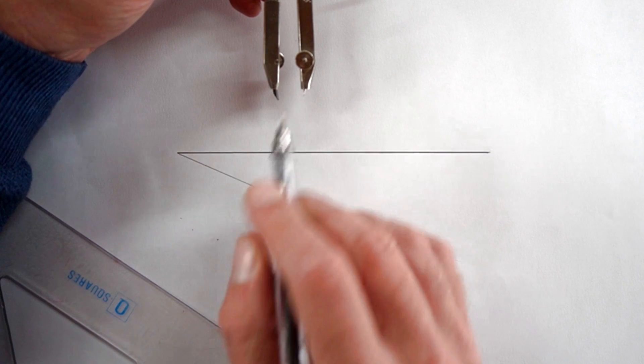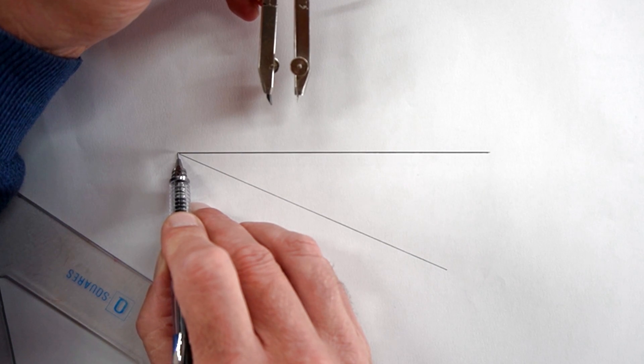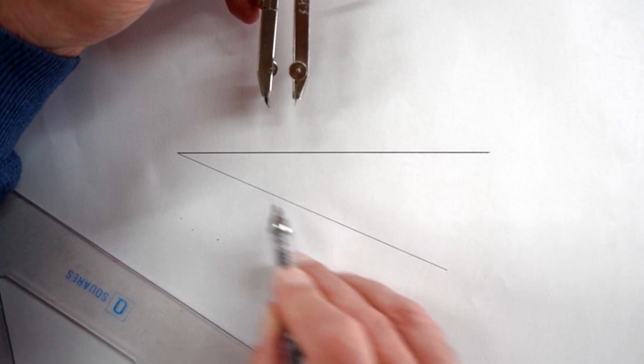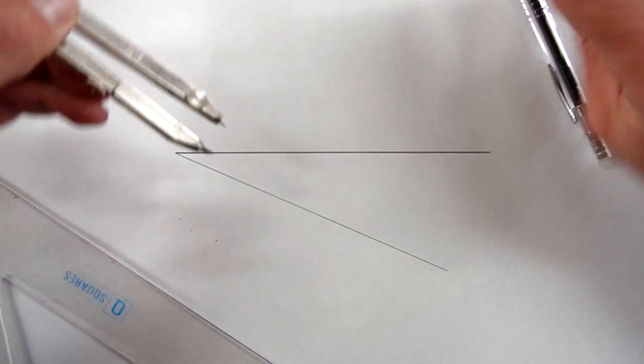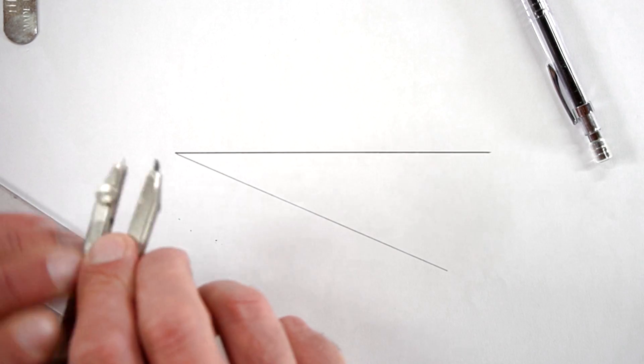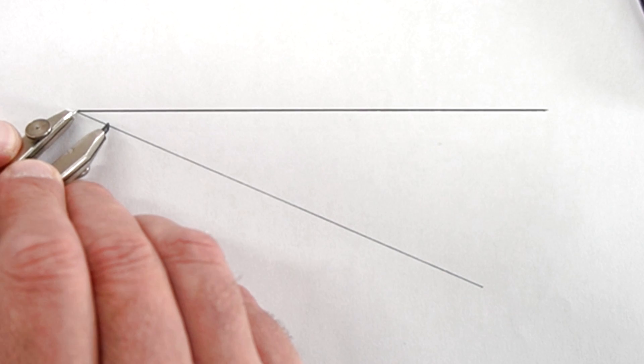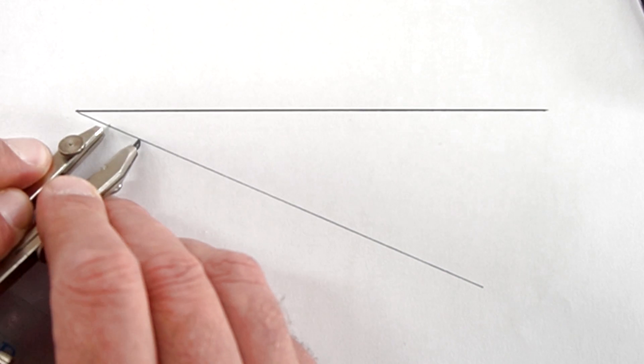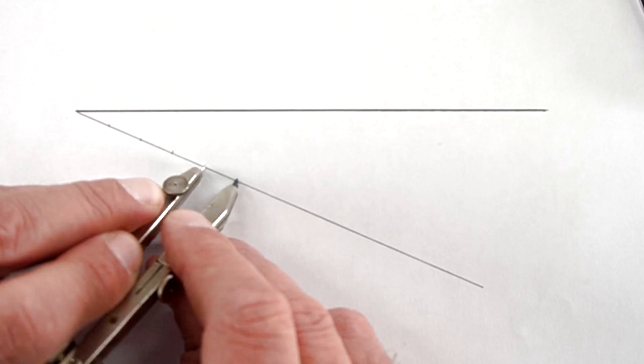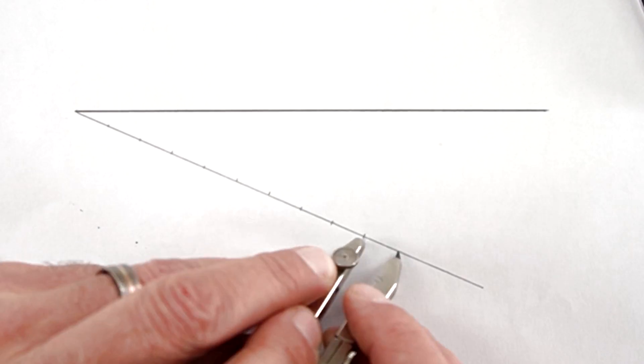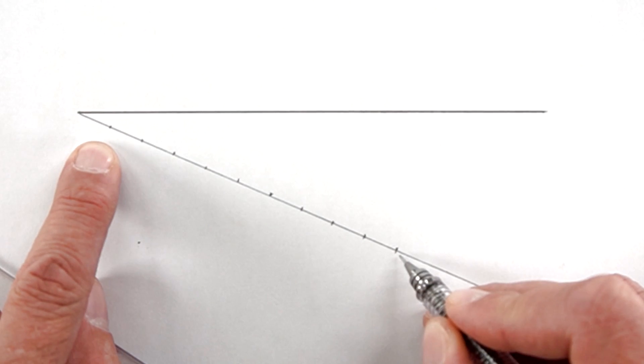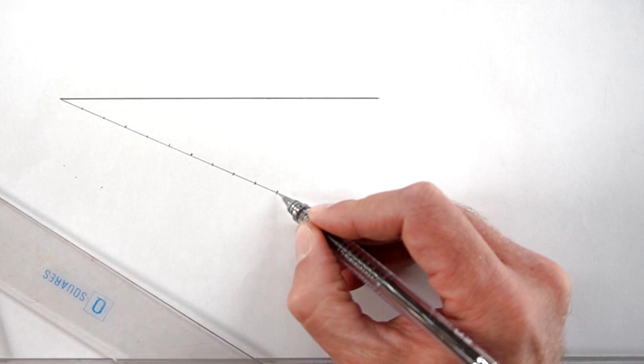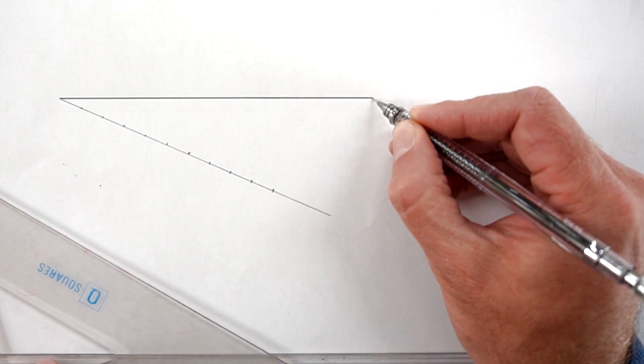So we're going to set our compass, and from the start mark 10 divisions: one, two, and so on. When you have your 10 divisions clearly indicated, go from the last one here to the end of your line.